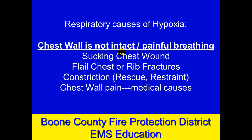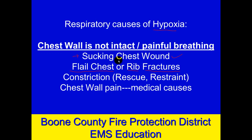More traumatic causes: the chest wall may not be intact. Maybe there's a hole in the chest from a gunshot, knife, or other penetrating trauma — an untreated sucking chest wound — because the chest is supposed to be a sealed system. It could also be a flail chest, which is a series of rib fractures — two or more consecutive ribs broken in two or more places. Those rib fractures make it hard and painful to breathe, so a person may not breathe deeply enough, causing hypoxia.